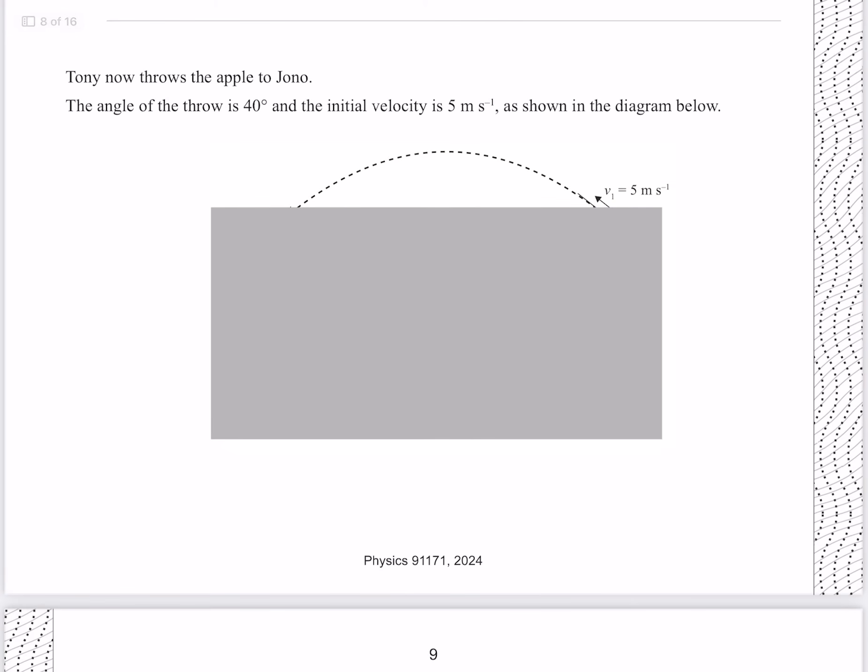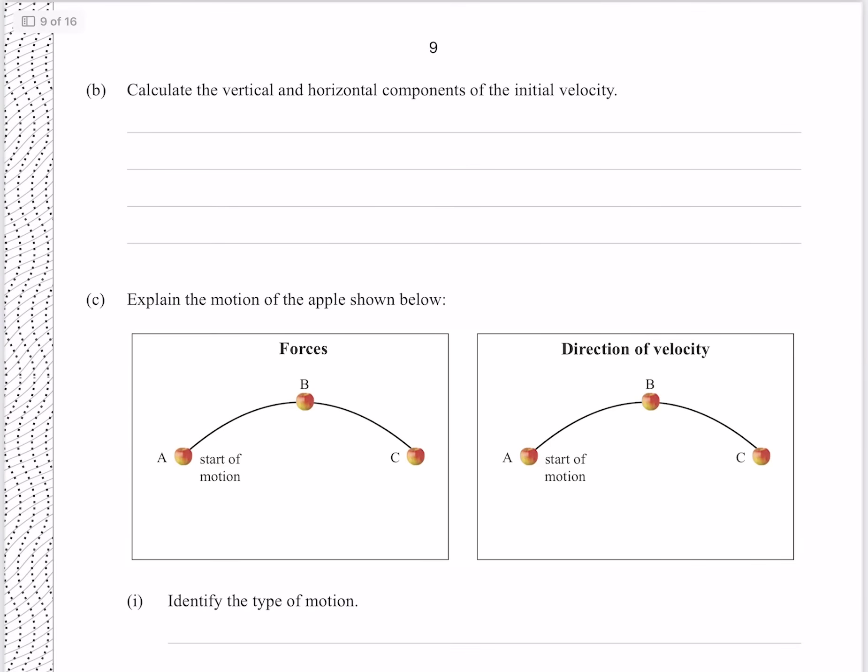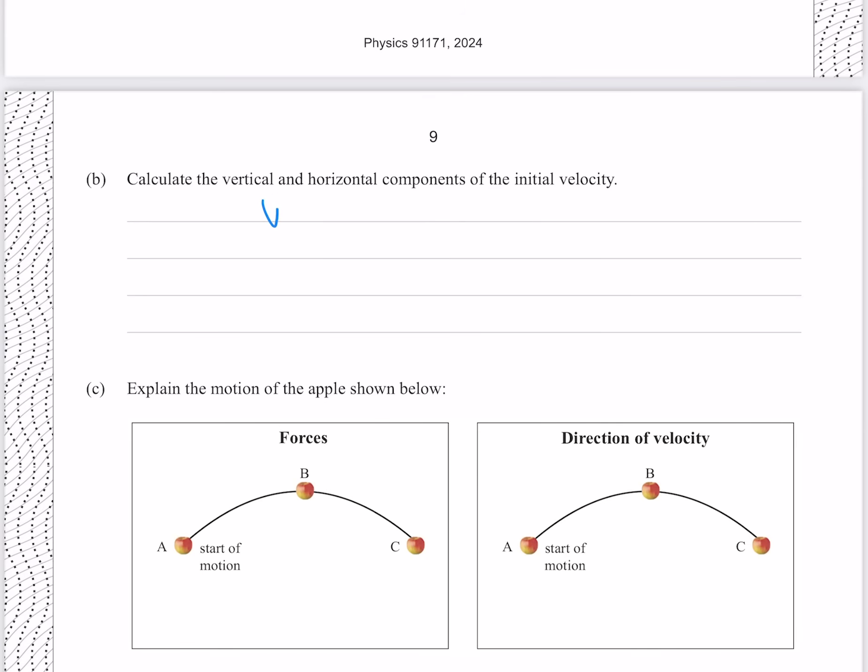Tony now throws the apple to Jono. The angle of the throw is 40 degrees, and the initial velocity is 5 meters per second, as shown in the diagram below. Calculate the vertical and horizontal components of the initial velocity. If our overall velocity is 5 meters per second, and our angle is 40 degrees, then our vertical component of the velocity is going to be 5 sine of our angle of 40, and our horizontal component is going to be the same, but with a cosine. You can verify this the long way around by doing SOHCAHTOA, where if we have our object going like that, at our angle theta, our horizontal side is going to be our adjacent side, and our vertical is going to be our opposite, and so we use the SOH relationship for our vertical, and the CAH relationship for our horizontal. That gives me 3.2 and 3.8 meters per second to two significant figures.